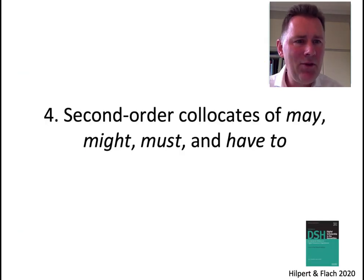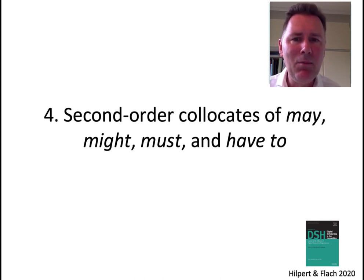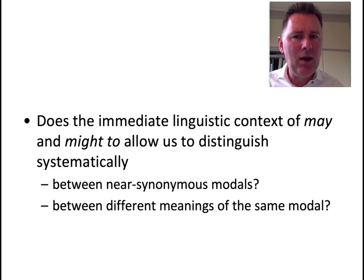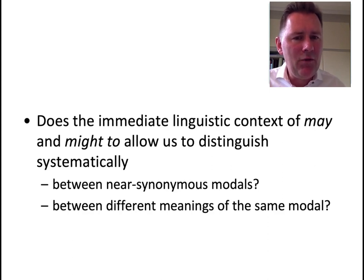In the fourth and final part of my talk, I want to discuss how pairs of near-synonymous modal auxiliaries can be distinguished on the basis of their second-order collocates. The two pairs I'll focus on are may and might on one hand and must and have to on the other — recent work done together with Susanne Flach. In this study, we wanted to find out whether the immediate linguistic context of may and might would allow us to systematically distinguish between near-synonymous modals and between different meanings of the same modal. In other words, how do speakers choose between may and might when both are available, and how do hearers disambiguate different senses of may?